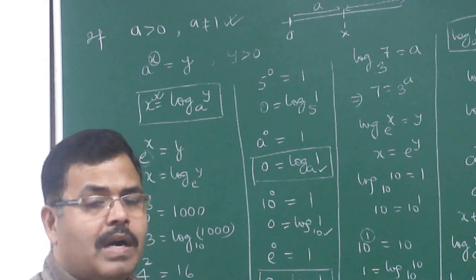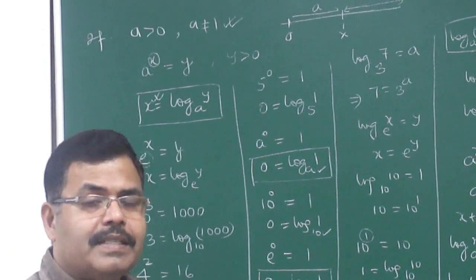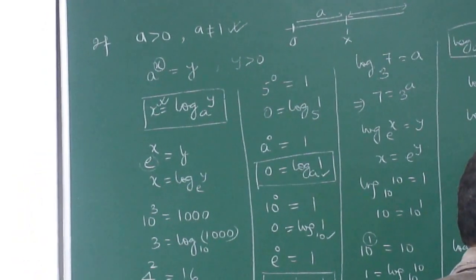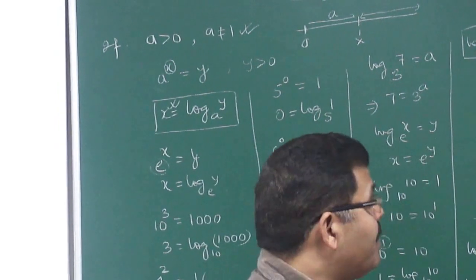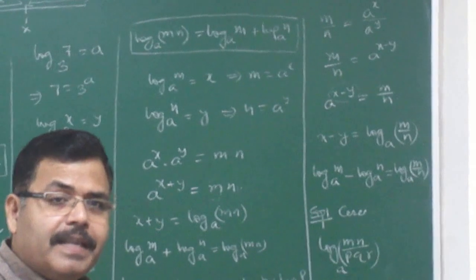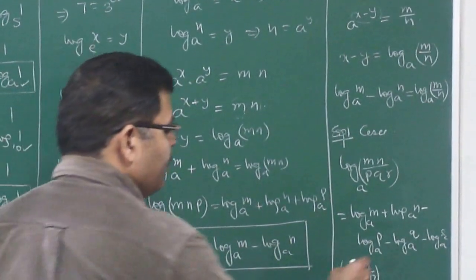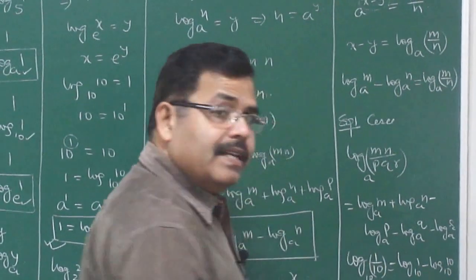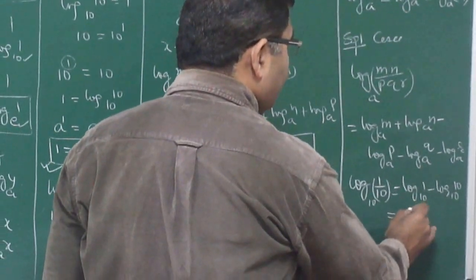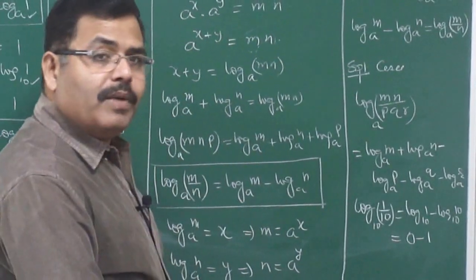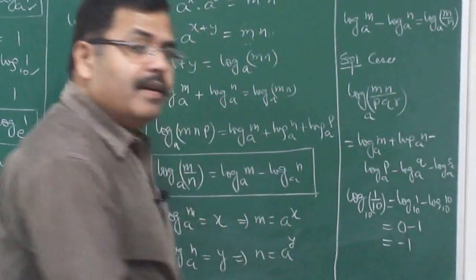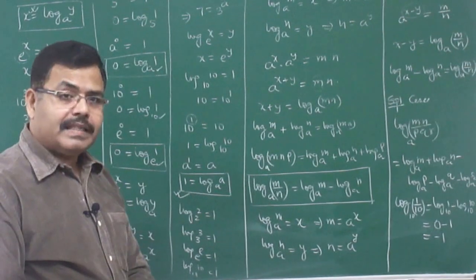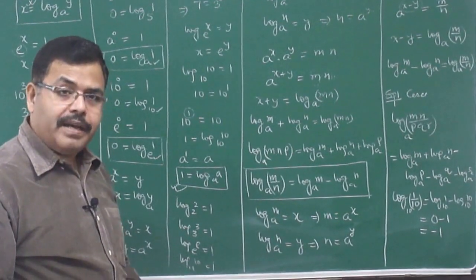The value of log can also be negative. For example, log of (1/10) to the base 10: using the quotient formula, this equals log 1 to the base 10 minus log 10 to the base 10. Log 1 is 0, log 10 to the base 10 is 1, so this equals 0 minus 1, which is minus 1. So the value of log can be negative.